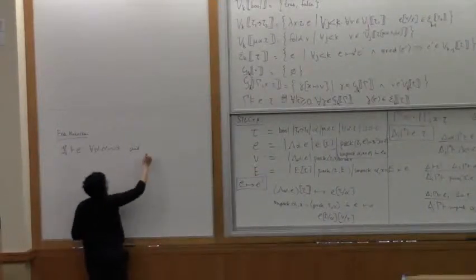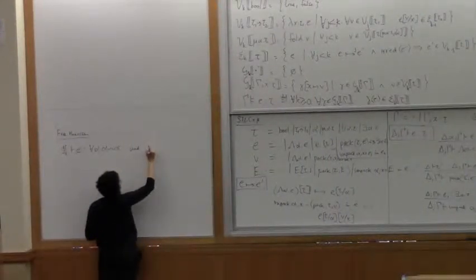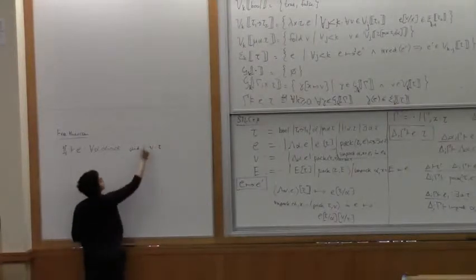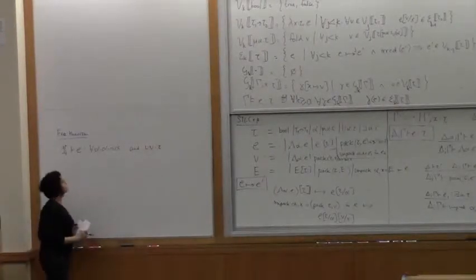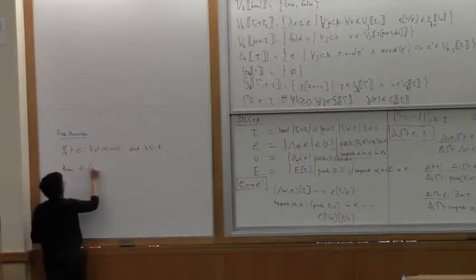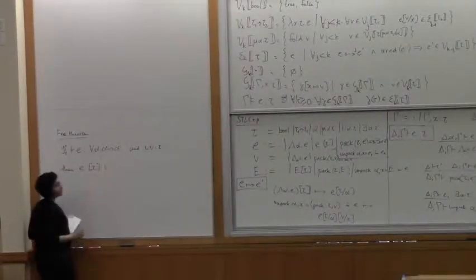We're given an arbitrary type tau and some value V of type tau, a closed value. Then we know that E applied to tau V.